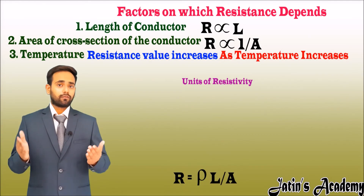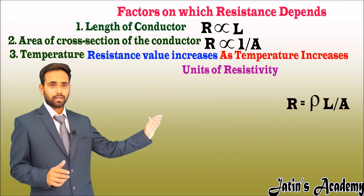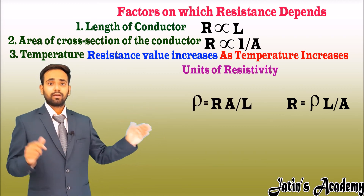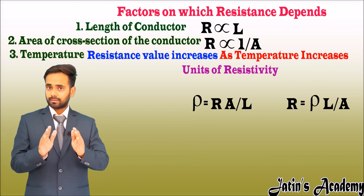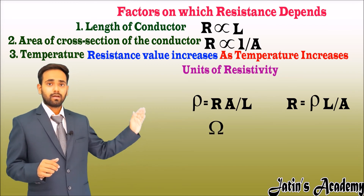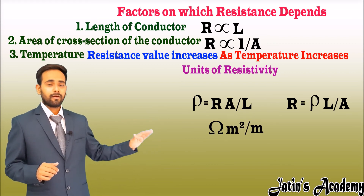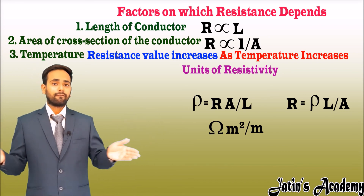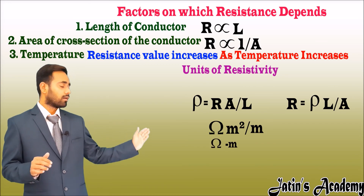Now let's see the units of resistivity. We have R equals rho times L over A. After cross-multiplying, we get rho equals R times A over L. The unit of resistance is ohm, area is in meter squared, and length is in meter. One meter cancels with one of the meters in meter squared, and we get the unit of resistivity as ohm-meter.